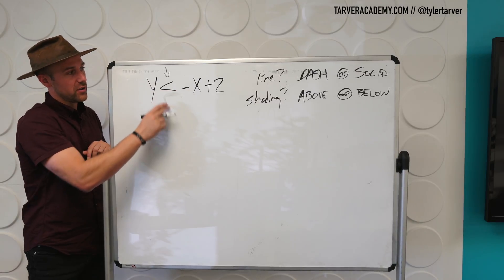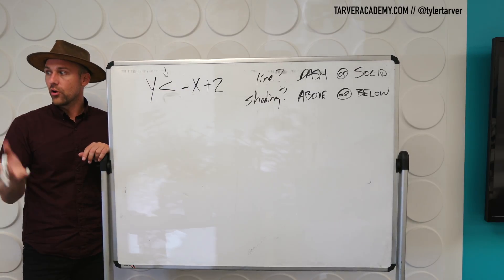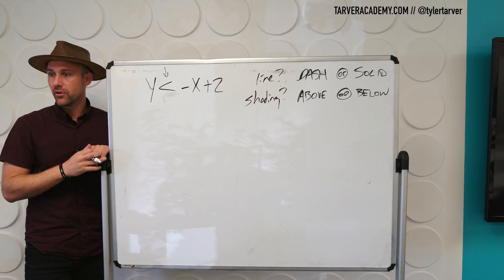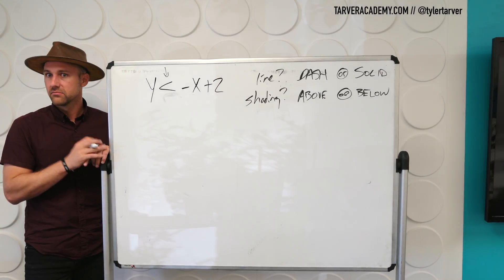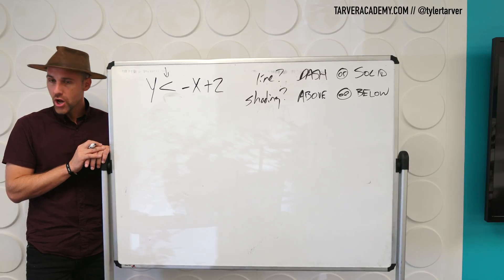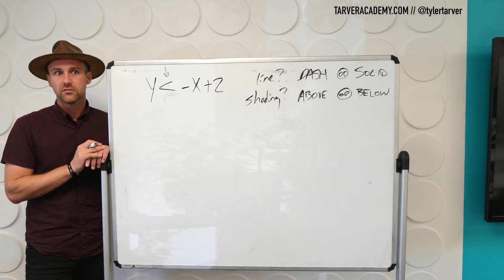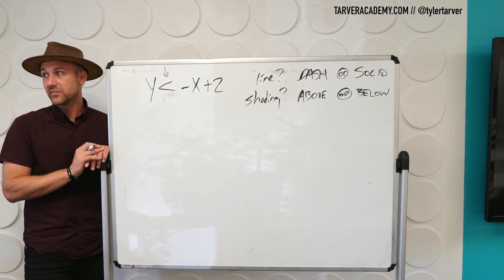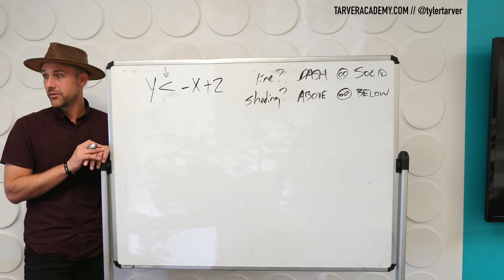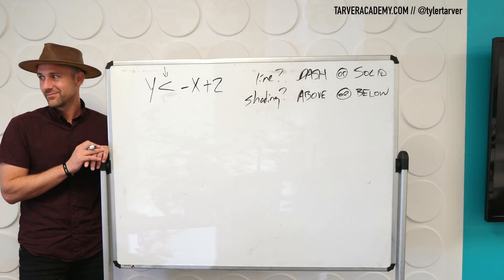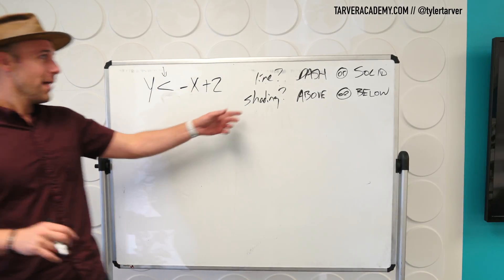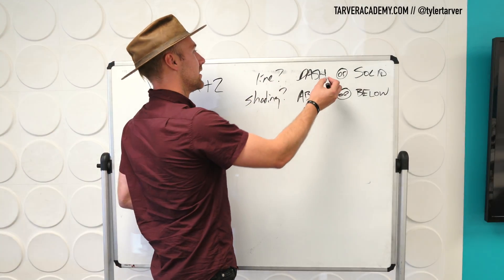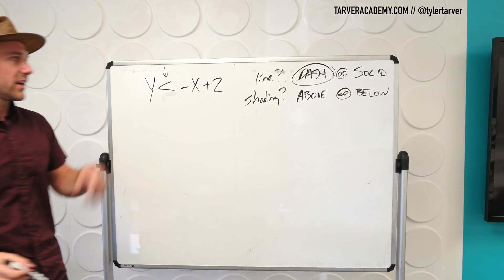Like we've said before, if it's greater than or if it's less than, it cannot be that number. I'm going to give you more than 50 bucks. Am I going to give you 50 bucks? No. I'm going to give you more than that. Spoiler alert, I'm actually going to give you guys less than $50. Zero dollars. Not really. Okay, here we go. So it is a dash line because it is less than.